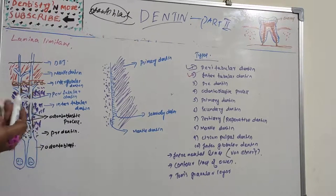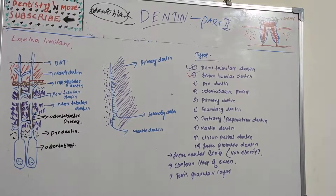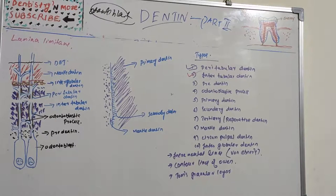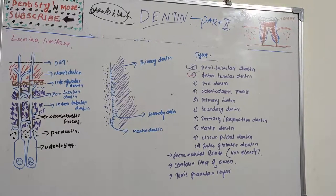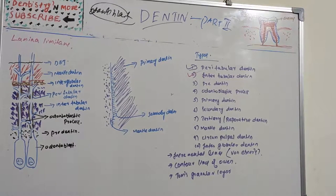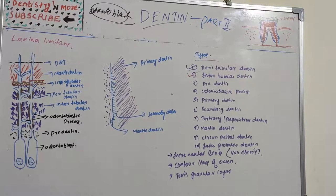Between the peritubular dentine we have intertubular dentine, shown in violet color in the picture. The collagen fibrils range from 0.2 to 0.5 micrometers in diameter. Hydroxyapatite crystals are formed along the fibers with their long axis oriented parallel to the collagen fibers. It is well mineralized but not as much as peritubular dentine, and it provides tensile strength to dentine.